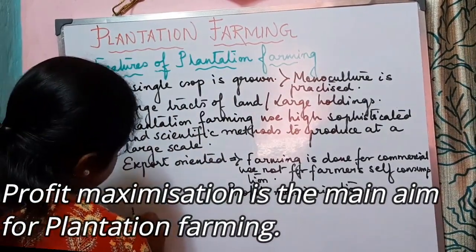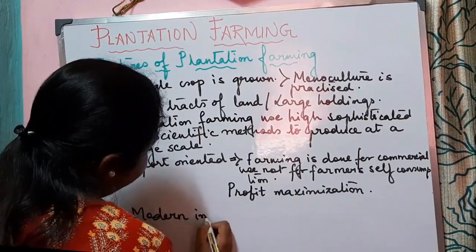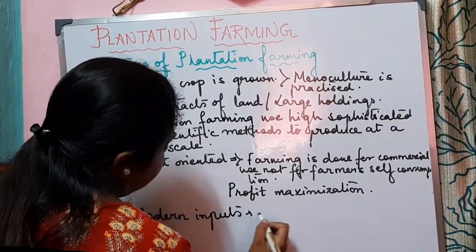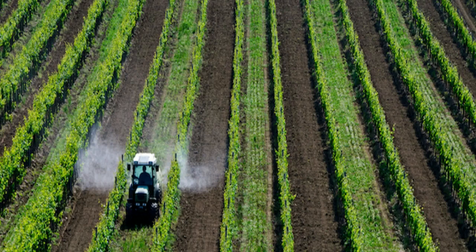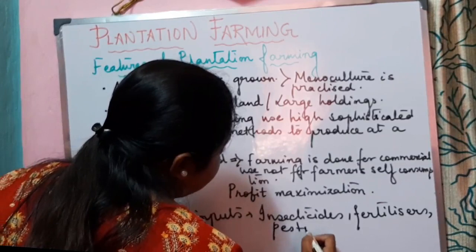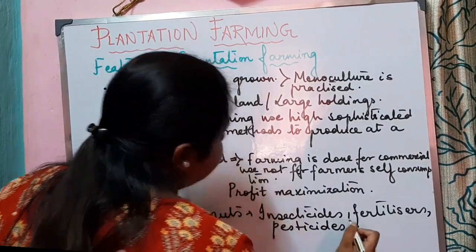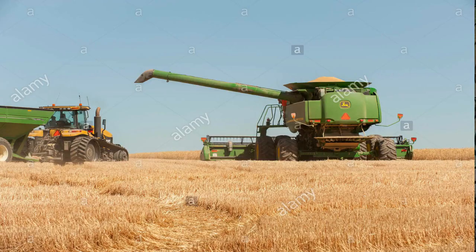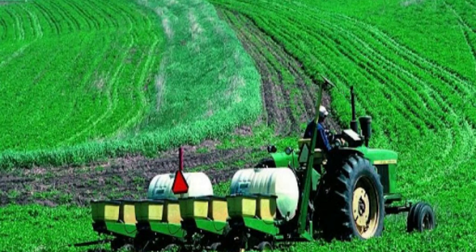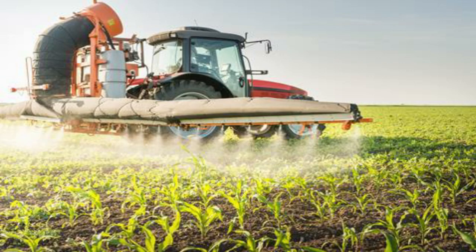They use modern inputs like insecticides, pesticides, and fertilizers at a large scale so that they can increase production. They also use modern machineries, as a lot of work is done with the help of these machines.